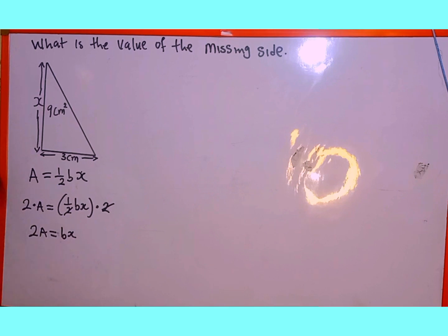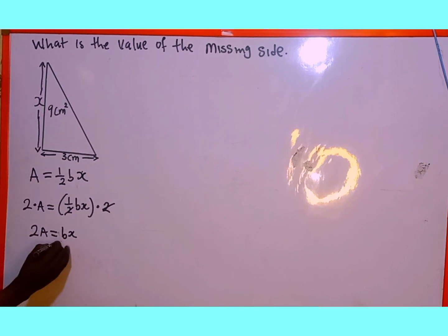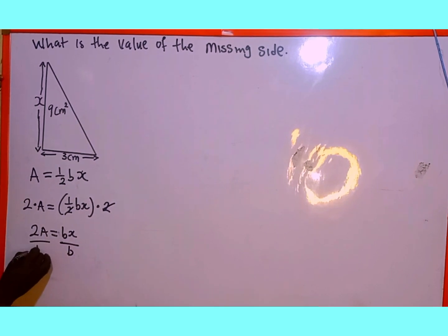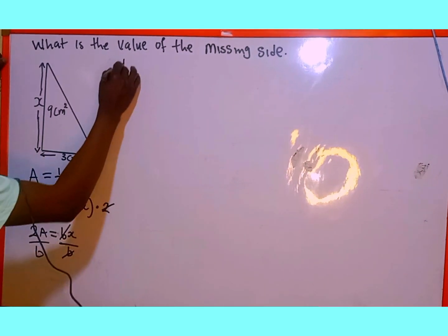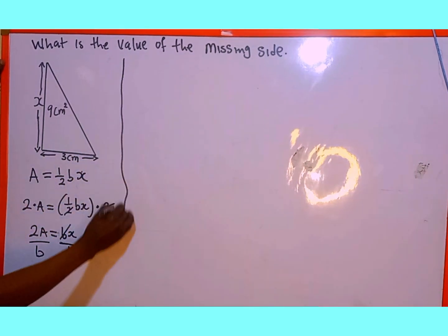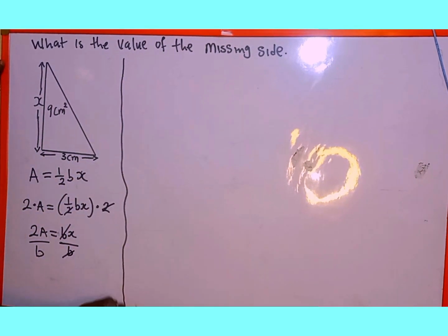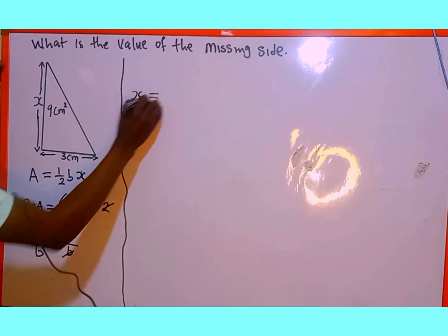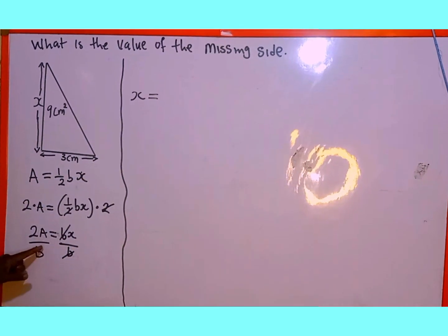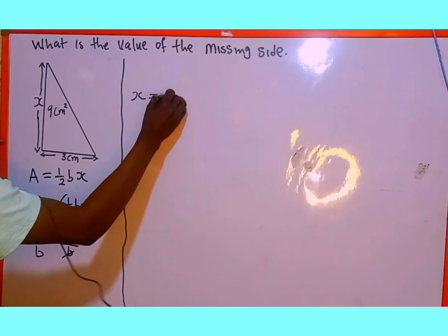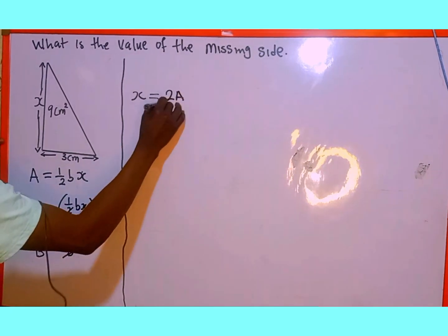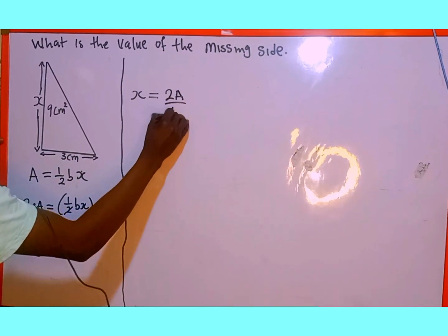Remember we are looking for the value of x. We divide both sides by the coefficient of x, which is b. This b will cancel that b, so on the right we are left with only x. Therefore x equals 2A over b, that is 2A divided by b.